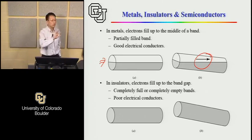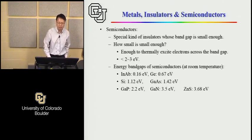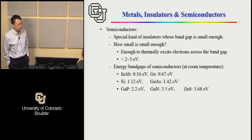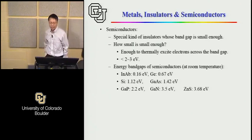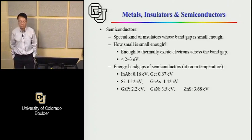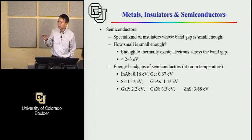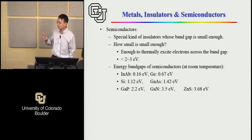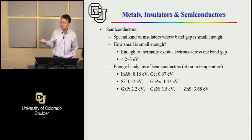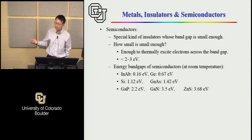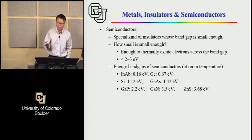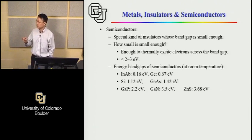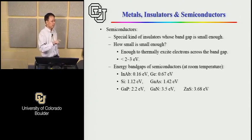Insulators are insulating because they have only completely full or completely empty bands — they can't conduct. Metals are good conductors because they have at least one partially filled band, and the electrons in those bands produce a net flow and therefore electrical conduction. So what is a semiconductor? A semiconductor is a special kind of insulator whose energy band gap is small. There is no strict scientific definition of how small — it's empirical and conventional — but in general, two to three electron volts qualifies as a semiconductor.